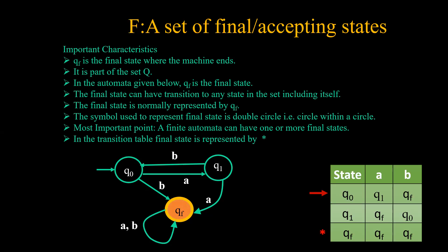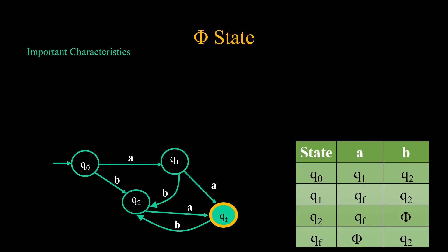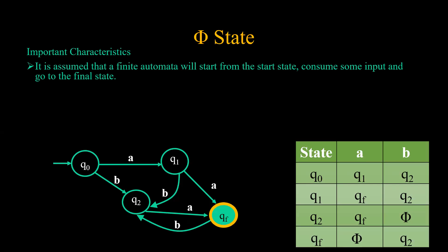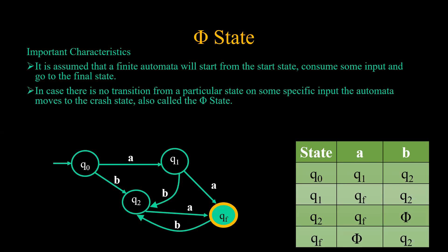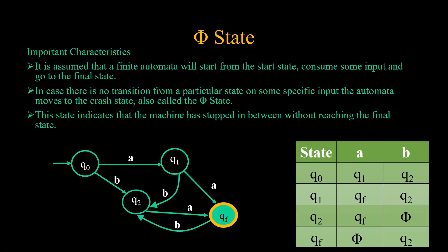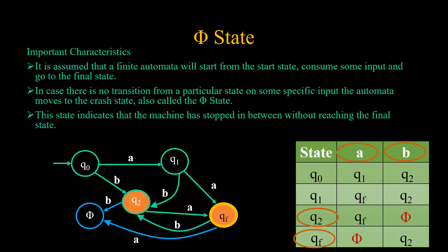In the transition table, the final state is represented by an asterisk. Now we have covered all five tuples. Another important concept is the phi state, also called the crash state. It is normally assumed that a finite automata will start from the start state, consume some input, and go to the final state. In case there is no transition from a particular state on some specific input, the automata moves to the crash state, called phi state. For example, Q2 on B has no transition, so it moves to phi. Similarly, QF on A has no transition, so it also moves to phi.